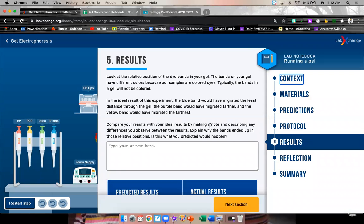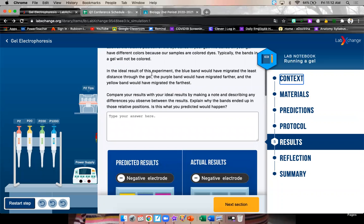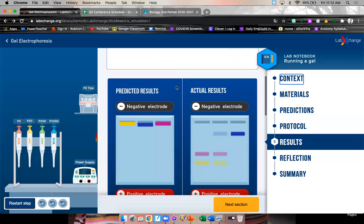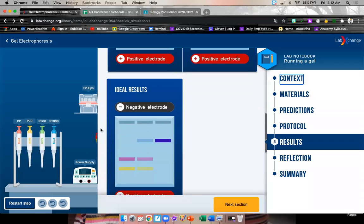So, to actually inspect it, we go to the next section and it says results. Look at the relative position of the dye bands in your gel. The bands in your gel have different colors because our samples are colored dyes. Typically, the bands in gel will not be colored. In the ideal result in this experiment, the blue band would have migrated the least distance through the gel. The purple would have migrated further, and the yellow would have migrated the farthest. We're talking about this one down here.